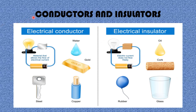An electrical conductor is a metal that allows electrical current to flow through it. Examples of conductors include water, which is a weak conductor, gold, copper, and steel. Electrical insulators are materials that don't allow electric current to flow through them — usually nonmetals. Examples include oil, cork, glass, and rubber.